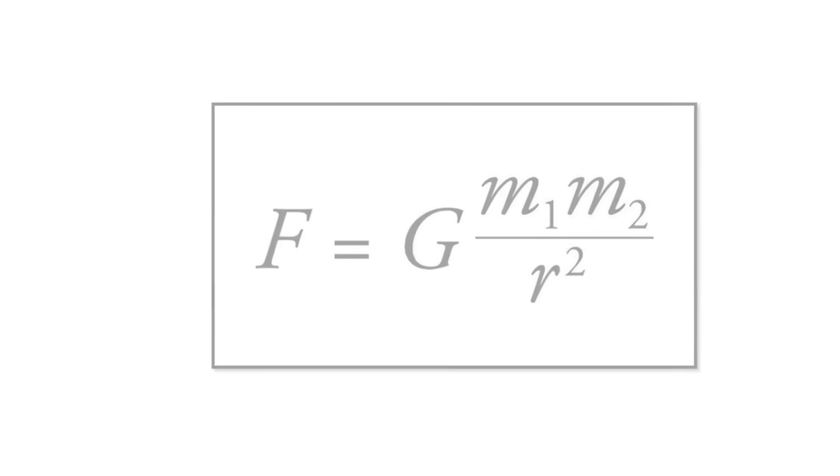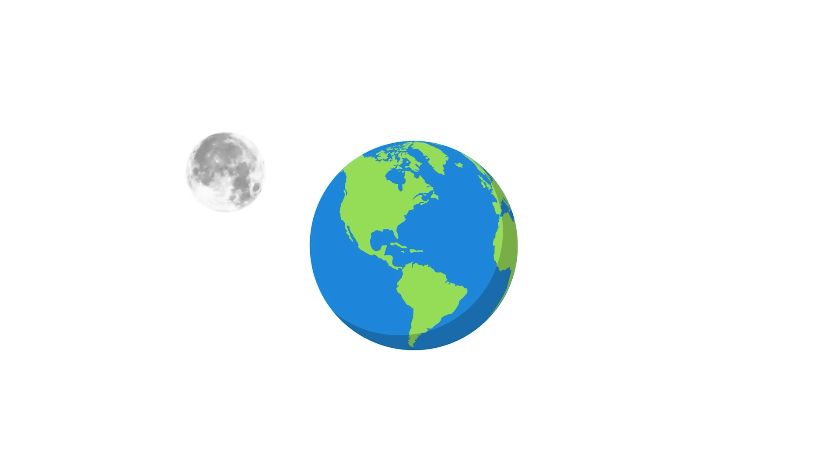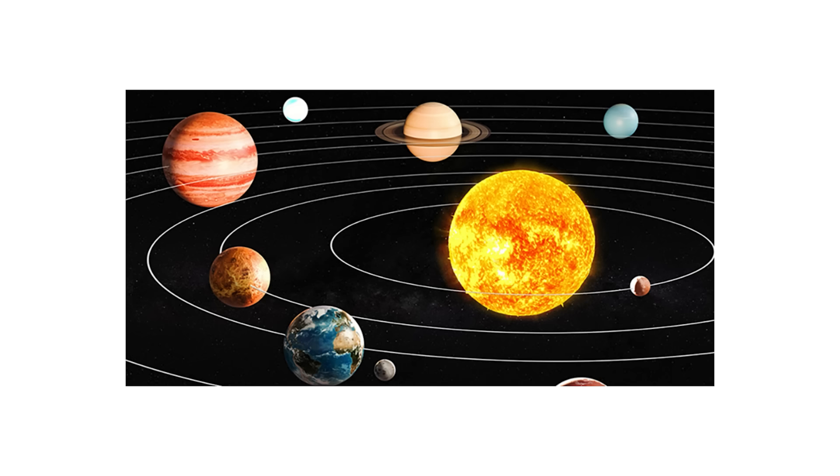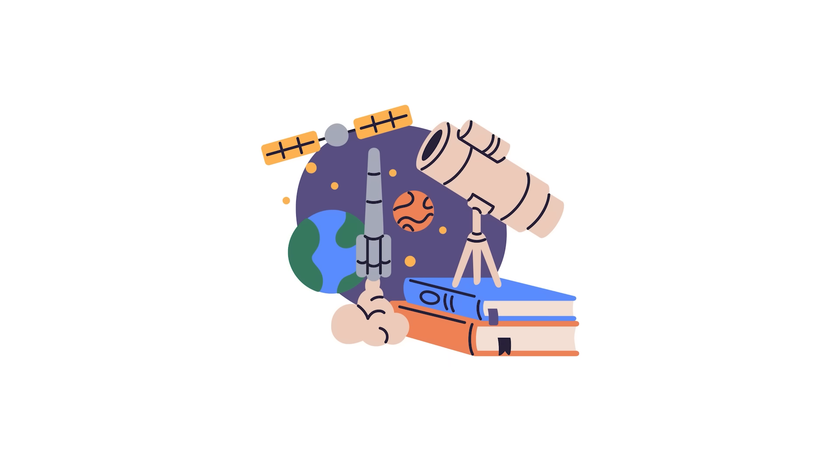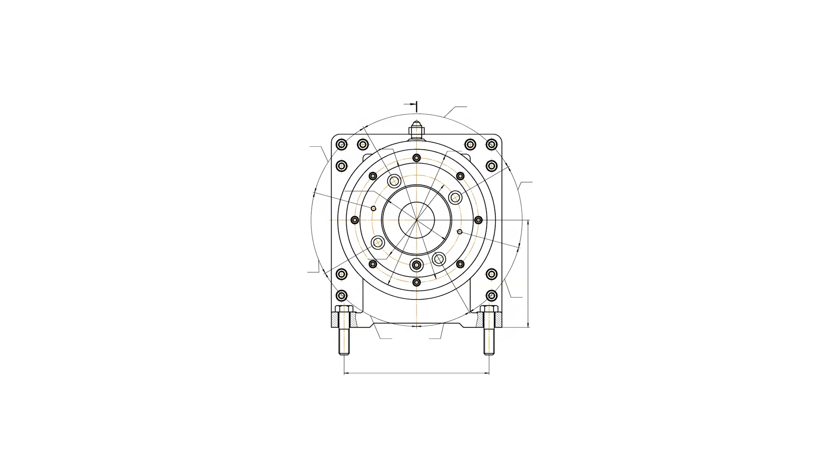1687: Newton's Law of Universal Gravitation. Newton's Law of Universal Gravitation explains how all bodies with mass attract each other, determining the movement of planets and satellites. It was key to modern physics, influencing astronomy, mechanics, and space research.